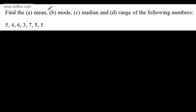So let's start off. We're asked to find the (a) mean, (b) mode, (c) median, and (d) range of the following numbers. Let's start off with the mean. When we're talking about the mean, this is the common average that we use. We simply add up all of the values and divide by the number of values that we have. So we can write, in this particular case, the mean is going to be 5 plus 4 plus 6 plus 3 plus 7 plus 5 plus 5.